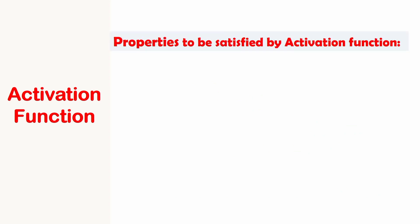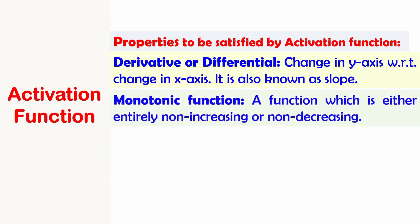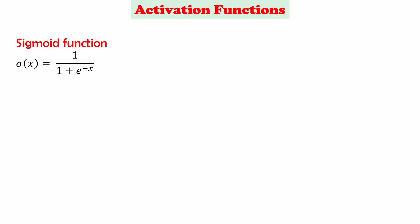An activation function should satisfy two properties. The first is that it should have a derivative — the change in the y-axis with respect to change in the x-axis, also known as slope. The second property is that it should be a monotonic function — a function which is either entirely non-increasing or non-decreasing. The choice of activation function in a deep neural network has a significant impact on the training dynamics and task performance.